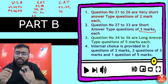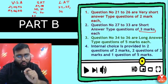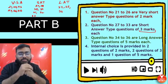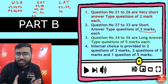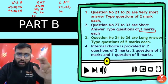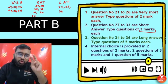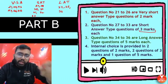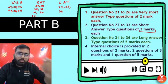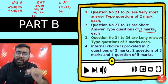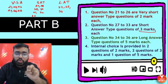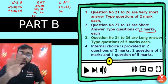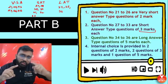There are internal choices provided in two questions of 2 marks, two questions of 3 marks, and one question of 5 marks. So in the very short answer section, two questions will have internal options — you can attempt either the first or second. Similarly, two questions in short answer type will have internal choices, and in long answer type, one out of the three questions will have an internal choice.